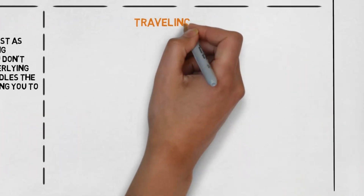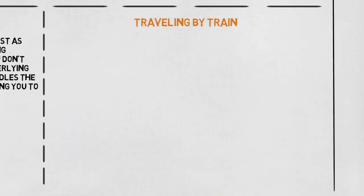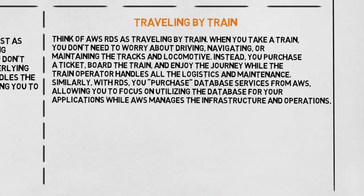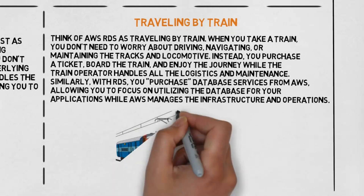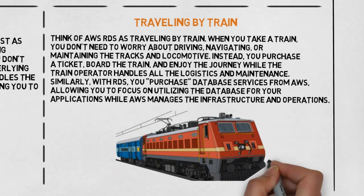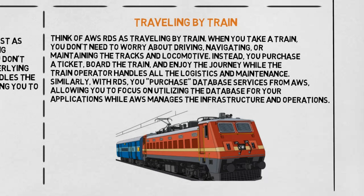Traveling by train: Think of AWS RDS as traveling by train. When you take a train, you don't need to worry about driving, navigating, or maintaining the tracks and locomotive. Instead, you purchase a ticket, board the train, and enjoy the journey while the train operator handles all the logistics and maintenance. Similarly, with RDS, you purchase database services from AWS, allowing you to focus on utilizing the database for your applications while AWS manages the infrastructure and operations.